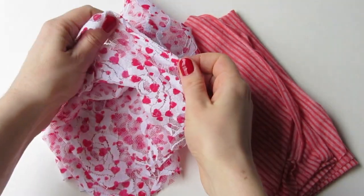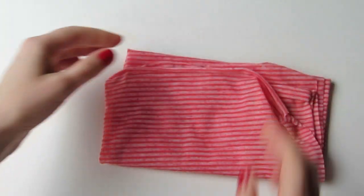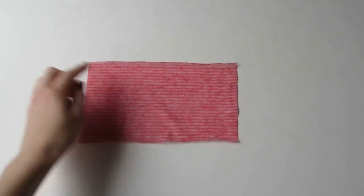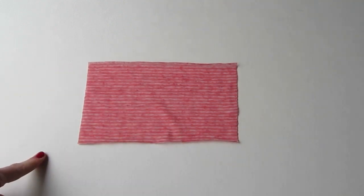You could use a stretch lace like this one, or today I'm going to use this very lightweight stripy knit. Cut a single rectangle out of your fabric 4 and 3/4 inches high by 8 inches wide to be the back of your sweater.